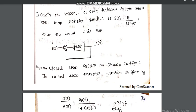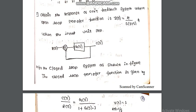Referring to the closed loop system, the closed loop transfer function is C(s)/R(s) = G(s) / [1 + G(s)·H]. Since it is negative feedback with unit feedback, H = 1, so it becomes G(s) / [1 + G(s)·1].